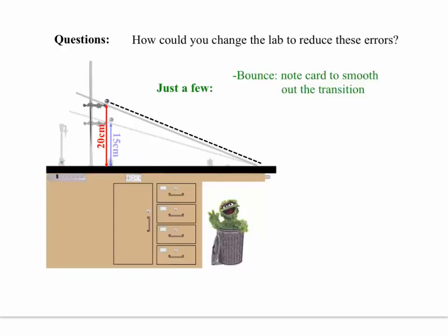I've seen students employ several different and creative methods to reduce the bounce at the end of the ramp. A simple method would be using a note card to smooth out the transition of the ball moving from the angled ramp to the flat table. Even a little bit of a curve on a single piece of paper can make a big difference in reducing that bounce.